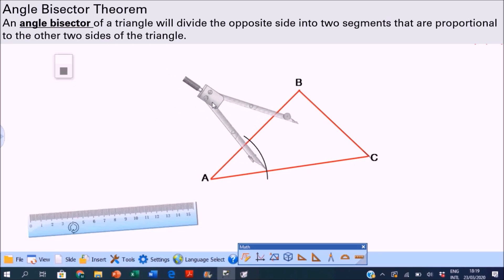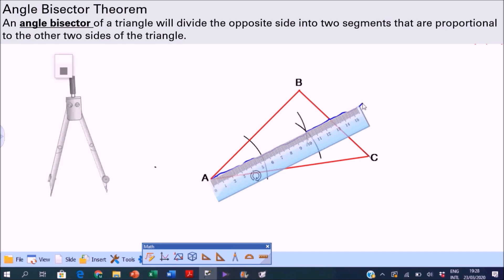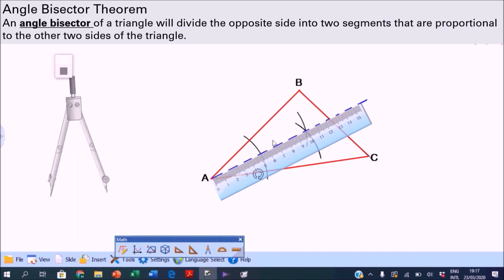Move the compass needle, draw an arc in the middle of the angle. Keep the compass radius, draw an arc intersecting the first arc. Then use the ruler, connect the vertex to the intersection of the arcs. That's the angle bisector. Extend it so that it cuts BC.